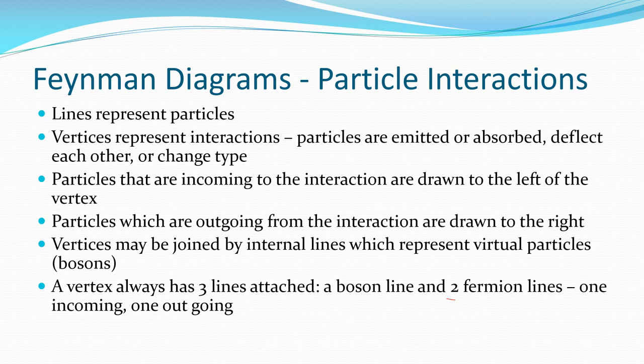A vertex usually has three lines attached to it. There's going to be the two fermions, that's the two particles that are interacting with each other. So maybe it's like the example before, an electron and a positron. And a boson line, the squiggly one, which is basically the photon that's mediating the force between those two. And usually there's some incoming ones and outgoing ones.